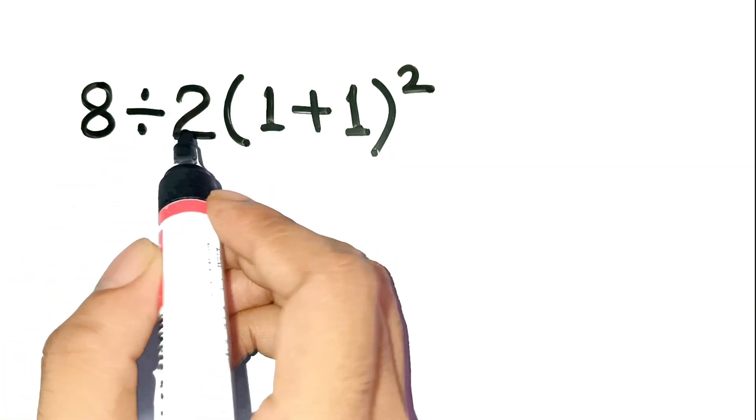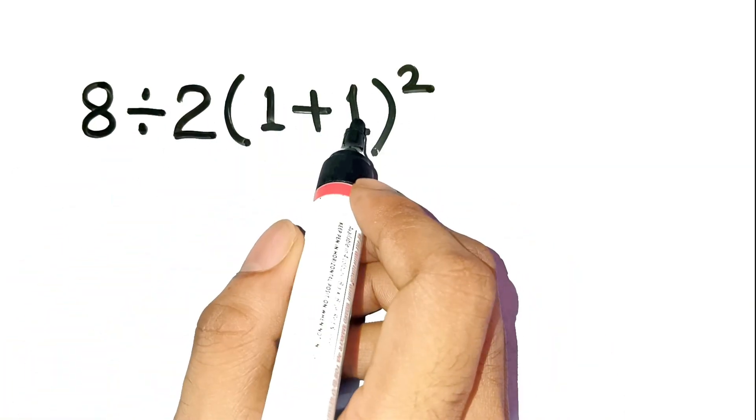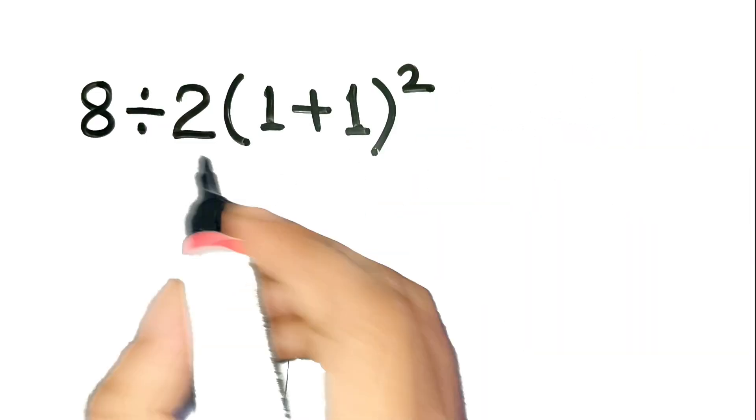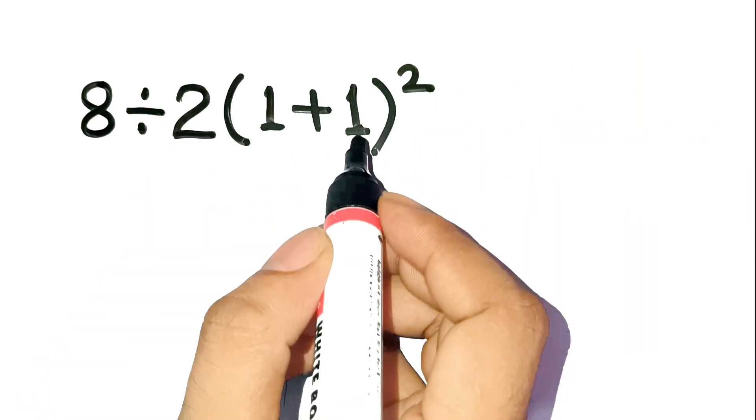8 divided by 2 times the quantity 1 plus 1 squared. Looks simple, right? A lot of people do this.